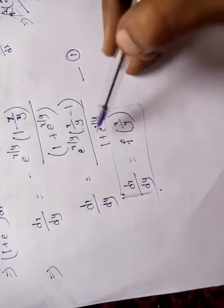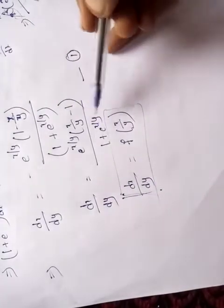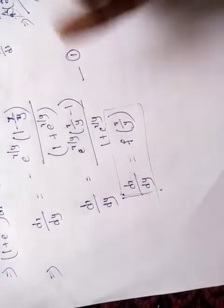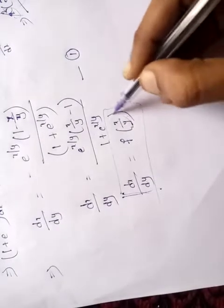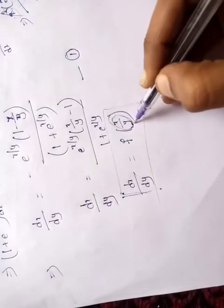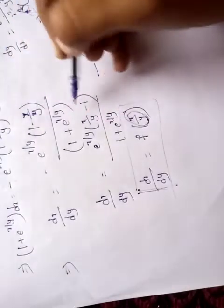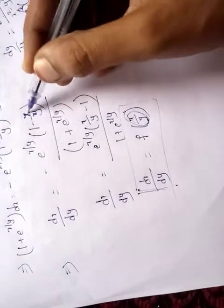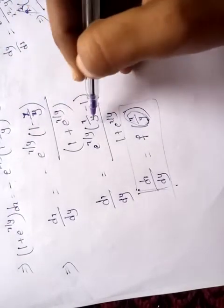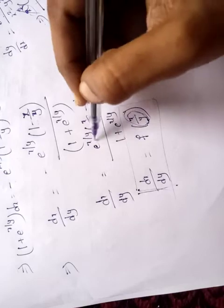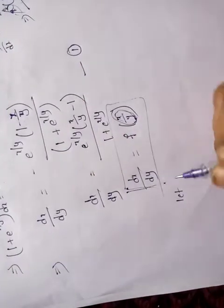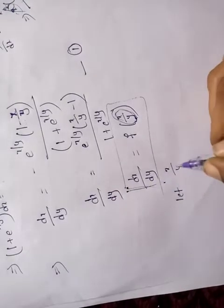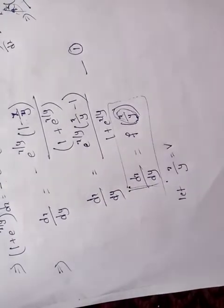Since equation 1 is of the form dx/dy = f(x/y), we let x/y = v, so x = vy.